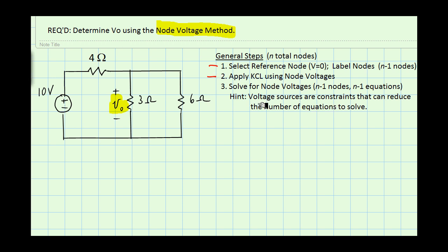However, there's a big hint: if you have voltage sources, those are constraints that tie the voltages at different nodes together, and that will reduce the number of equations that we actually have to solve. It will simplify our math, which of course we like to do.